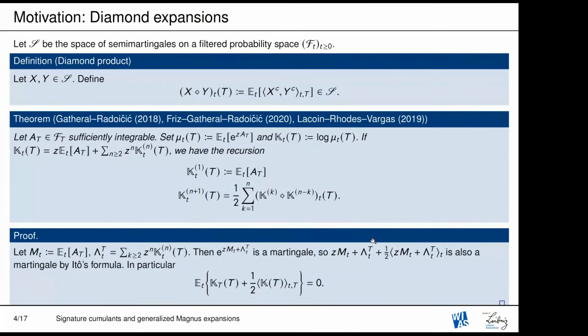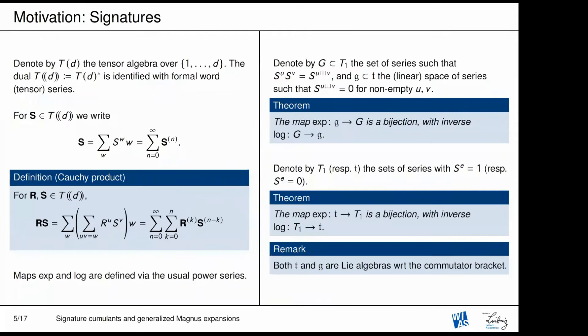Now we would like to understand possible generalizations of this fact. When considering dynamics, I immediately think about Taylor expansions and iterated integrals, as was presented in the talk just before mine. And when speaking about iterated integrals, I immediately think of signatures. This slide is just to fix notation — a signature is nothing more than the collection of iterated integrals of some function.